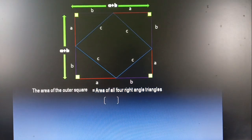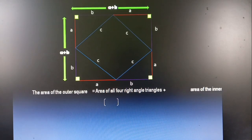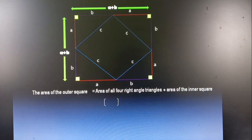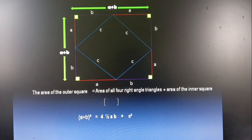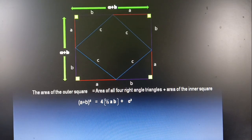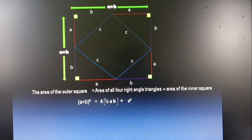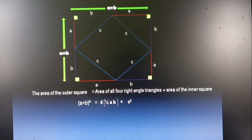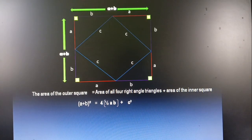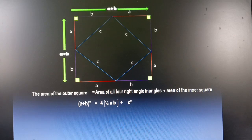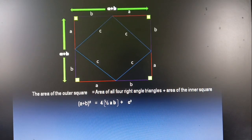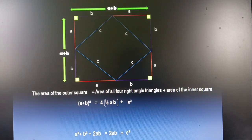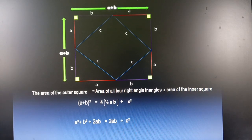That is, mathematically we can write A plus B whole square must be equal to 4 times half AB plus C square. Now, upon expanding the terms on both sides of the equal sign, we will have A square plus B square plus 2AB must be equal to 2AB plus C square.